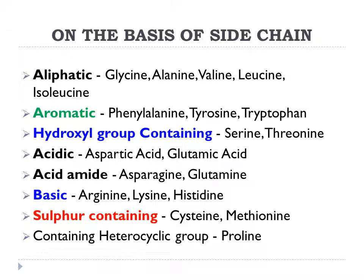On the basis of the nature of their side chains, amino acids can be divided into: aliphatic amino acids, aromatic amino acids, hydroxyl group-containing amino acids, acidic amino acids, acid amides, basic amino acids, sulfur-containing amino acids, and heterocyclic group-containing amino acids. This classification is very important from an examination point of view and can be asked in MCQs, SAQs, and VIVA.